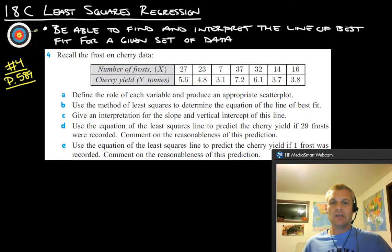So we just have one example to look at, and this is example number four from page 589. And there's some data on frost on cherry data from previously in the chapter. Anyway, what we want to do, here's all the data that they give us.